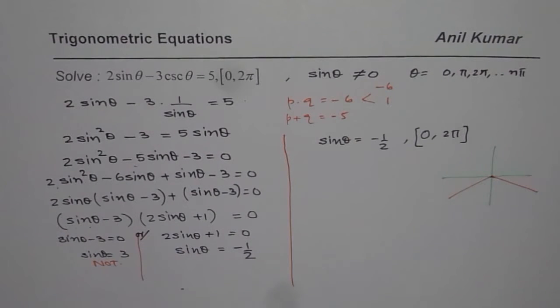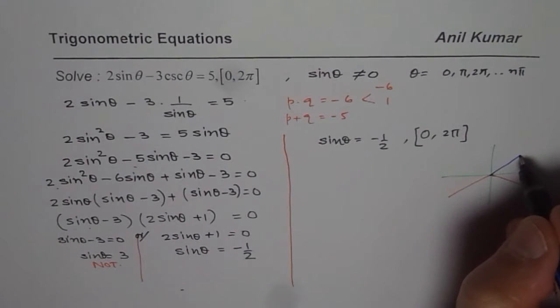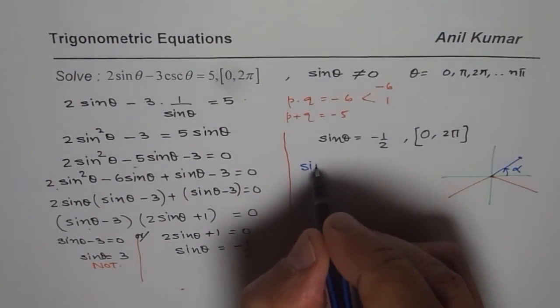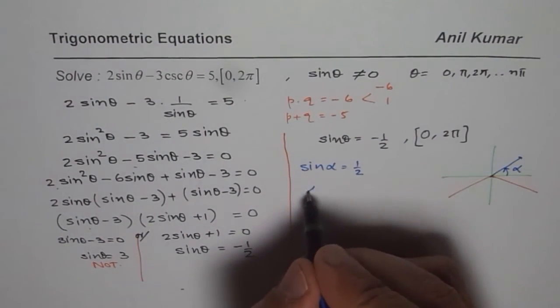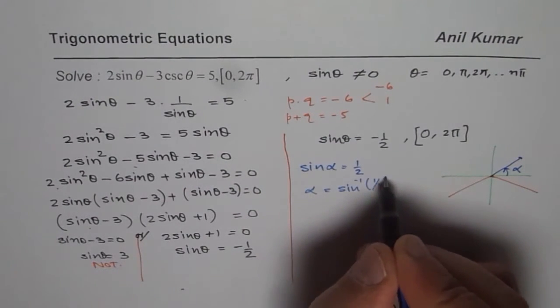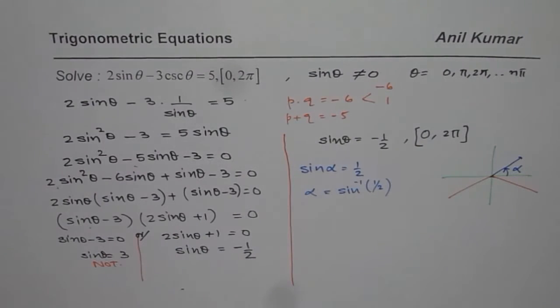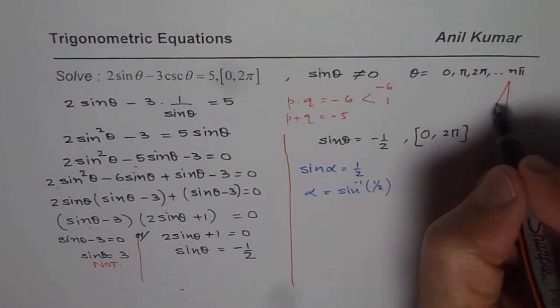To find what is the principal angle, we will first find the acute angle, the reference angle. So let us say alpha is a reference angle. And we will solve for sin alpha equals to half. You can use calculator and say alpha equals to sin inverse of half and find the answer. The other way is we can also draw our standard triangles, special triangles.